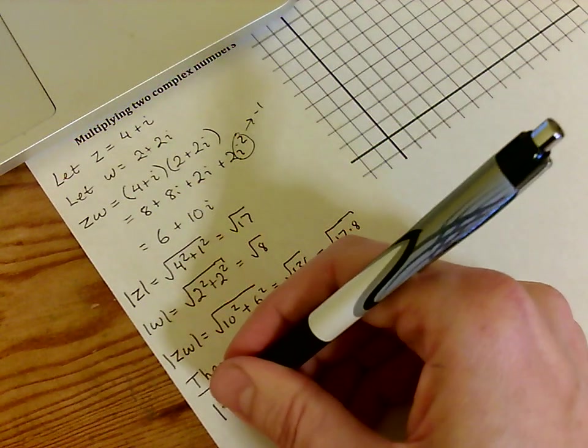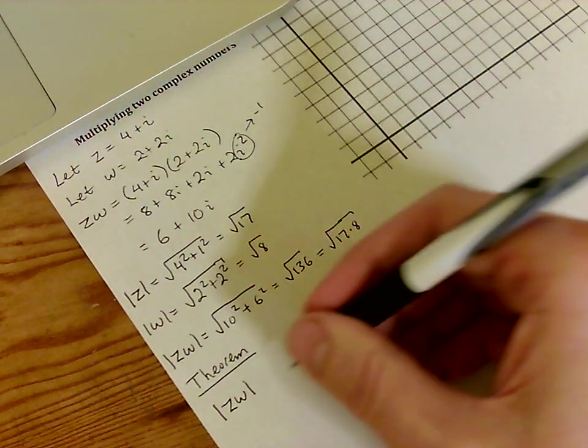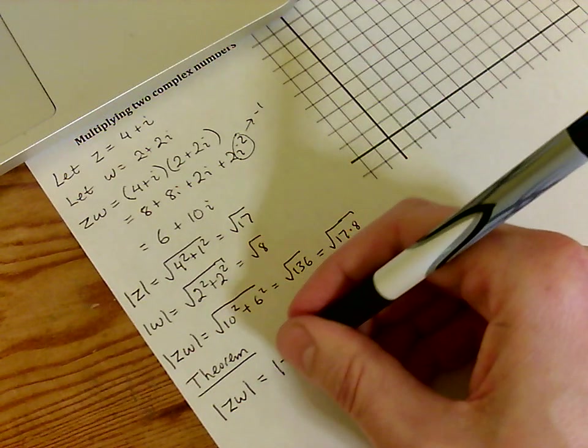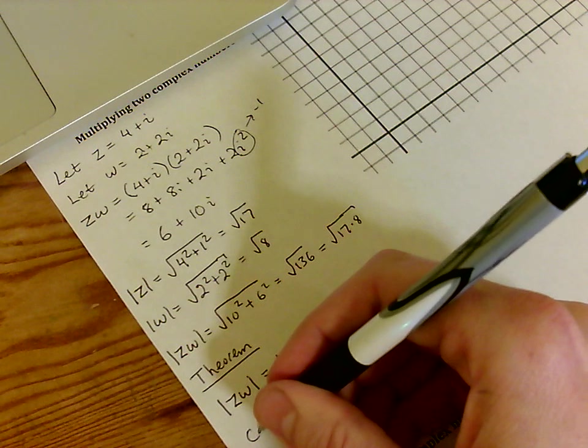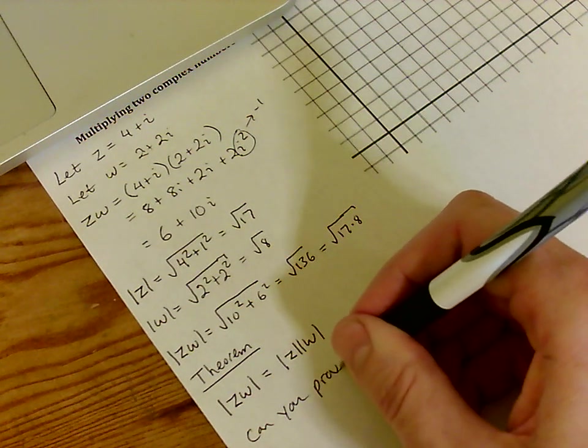The absolute value of any two complex numbers multiplied, z times w, is simply the product of the individual absolute values. Bonus if you can prove this on your own.